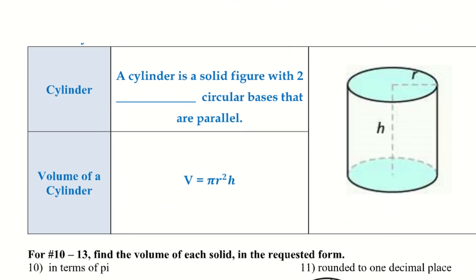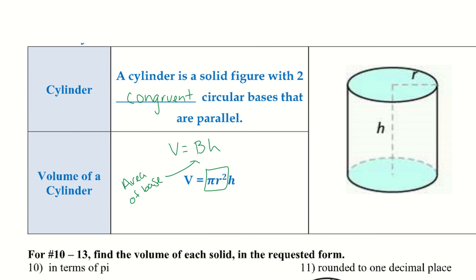A cylinder is a solid figure with two congruent circular bases that are parallel. The volume of a cylinder equals V = πr²h. This still follows V = B × H, where the area of the base for a circle is πr². Make sure to include pi for the circle.